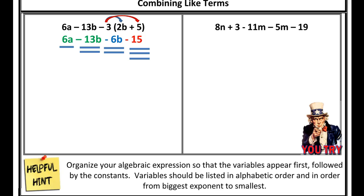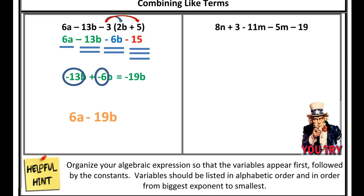The only two terms I need to combine are negative 13b and negative 6b. I'll drop down 6a because it's already simplified. Negative 13 plus negative 6 gives me negative 19b. Going in alphabetical order — a, b, and constants at the end — I drop down my negative 15. There's my final answer.